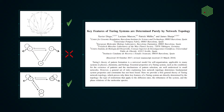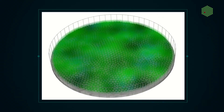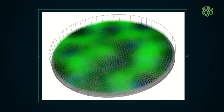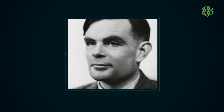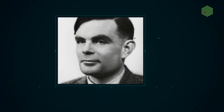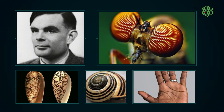This understanding dispels the common notion that Turing patterns are too fragile to have a relevant role in biology. Our theory provides a fundamental toolkit for experimental biologists to engineer synthetic Turing systems in the lab. If they succeed in programming cells to make such patterns, that would be a definite proof that Turing was right all along.